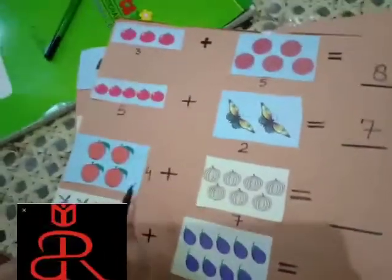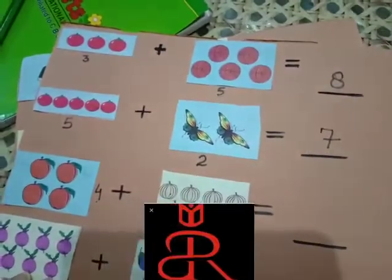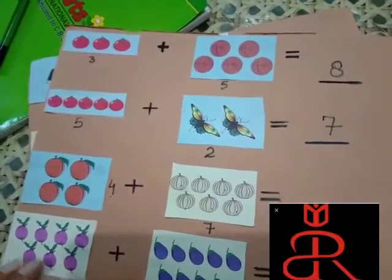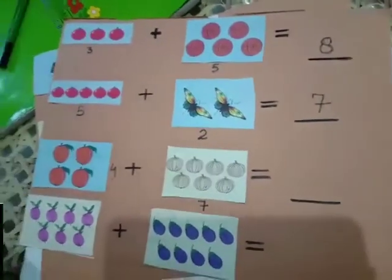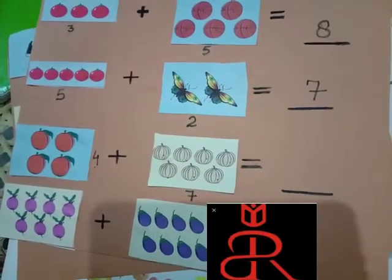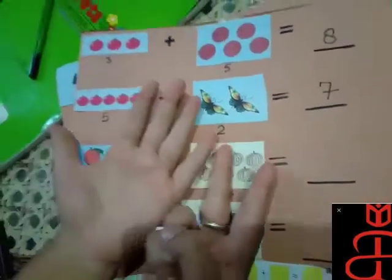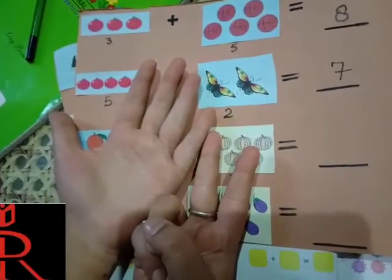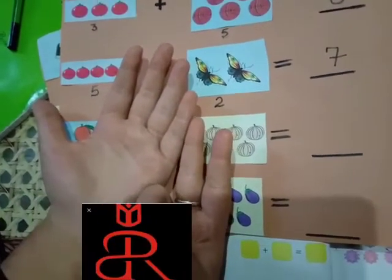Now, if I will add four and seven, what the answer will come? Chalo. Now, we will start adding. Keep four on your head and seven on your fingers. We will start counting after four.